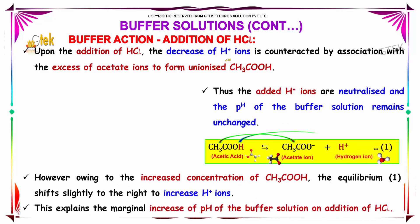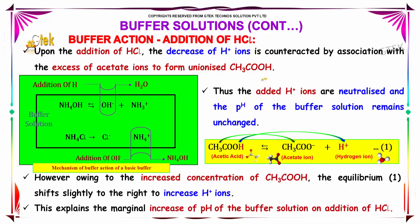Let us discuss the buffer action in terms of addition of hydrochloric acid. Upon the addition of hydrochloric acid, the decrease of H+ ions is counteracted by association with the excess of acetate ions to form unionized CH3COOH. Thus, the added H+ ions are neutralized and the pH of the buffer solution remains unchanged. CH3COOH gives acetate ions and H+ ions.